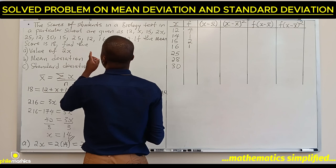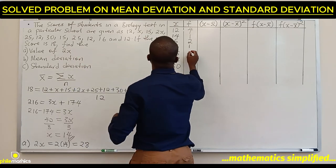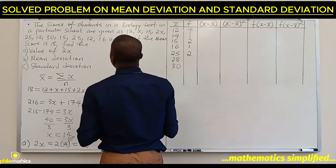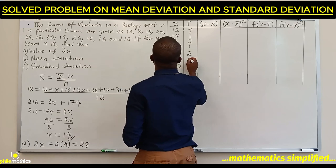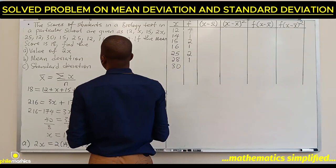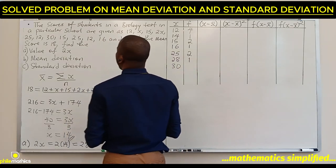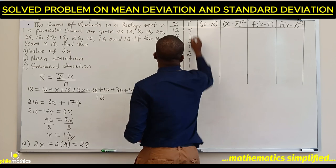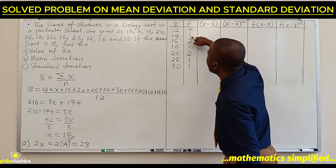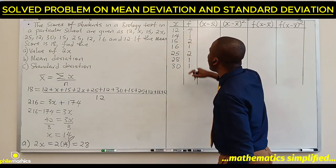16 appears 1 time. 25 appears 2 times. 28 appears 1 time. And 30 appears 1 time. If we sum this, we should have 12: 4, 5, 7, 8, 10, 12. Correct.